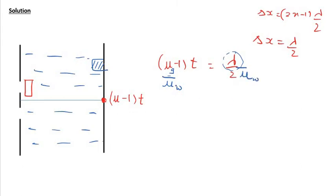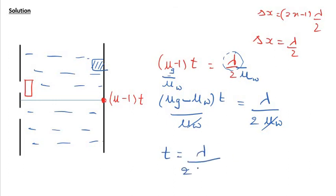Most of the viewers will think I'll cancel mu g from here, that is incorrect because here it is minus 1. So mu g minus mu w times t upon mu w, that is equal to lambda by 2 into mu w. Now you can cancel this mu w and find out this thickness as lambda upon twice of mu g minus mu w. And now I leave this calculation on my viewers and their sense of judgment.